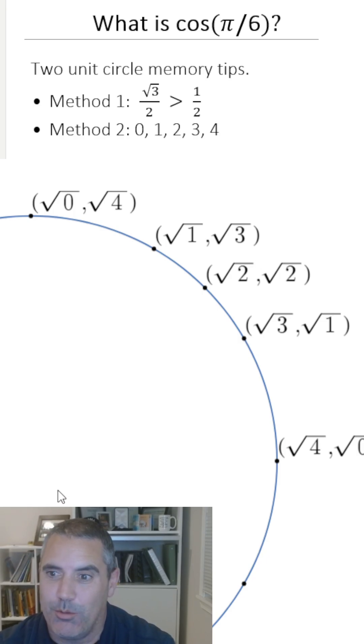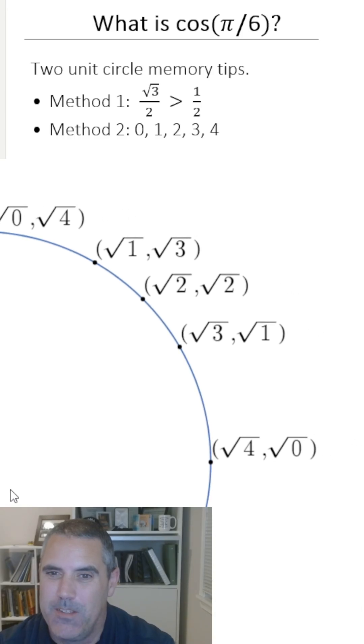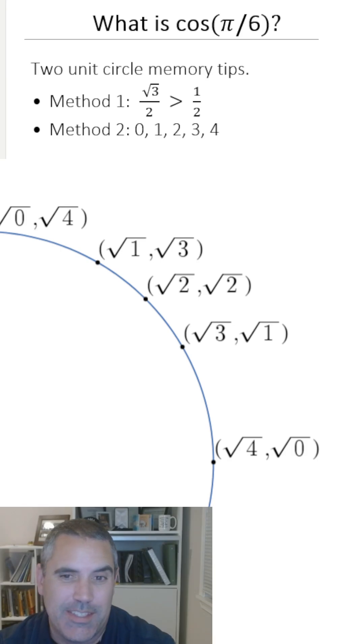So students have told me they really like that. It's a quick way to generate your unit circle without even having to think. You just have to remember where one of the zeros is. And then once you know those, you know all the rest.